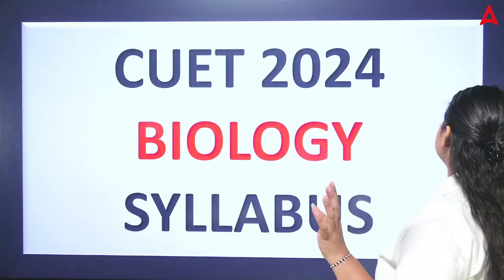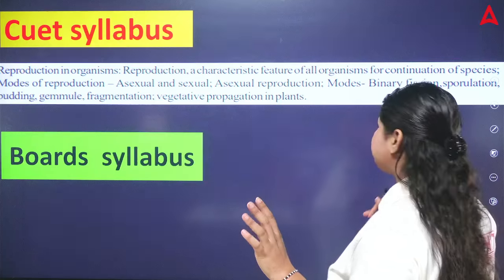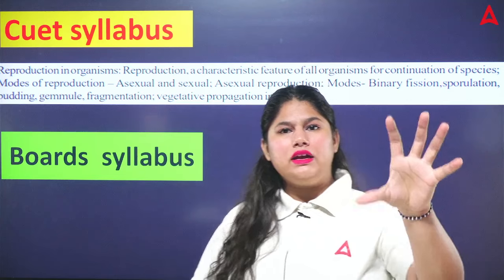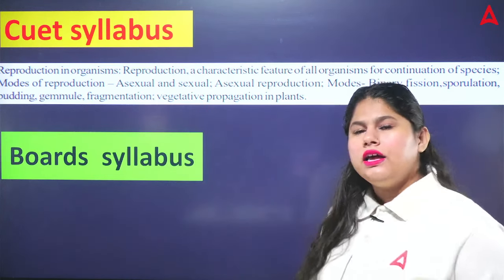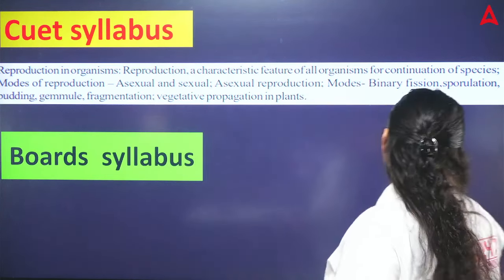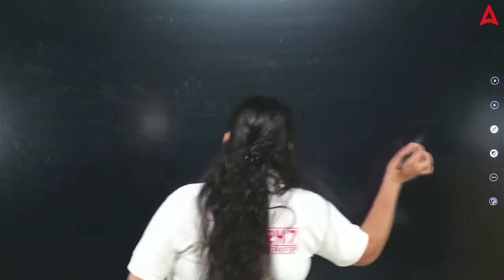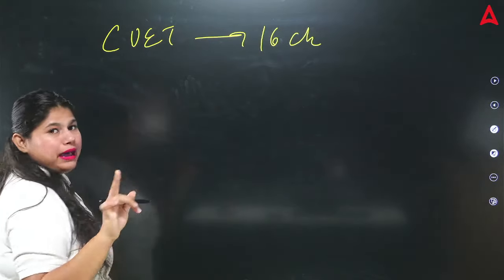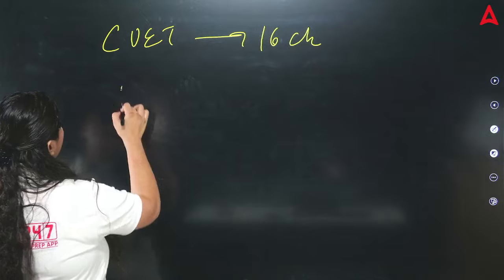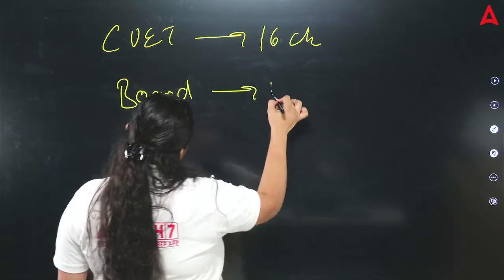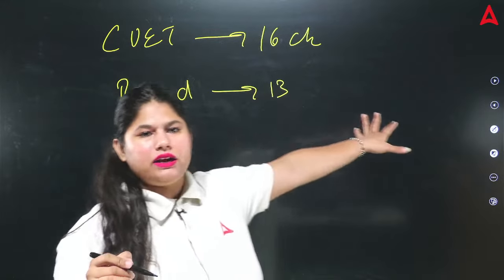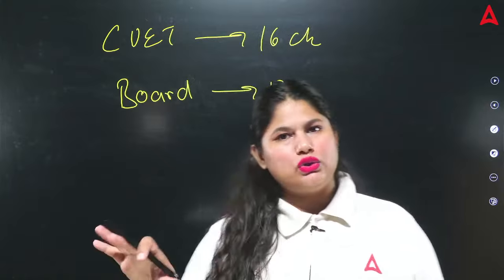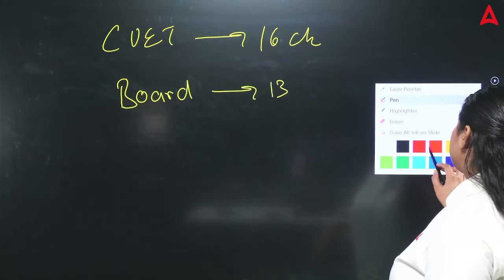I have organized the syllabus so you will not be frustrated. There is the syllabus of CVT and one is the syllabus of the board. Any chapter or topic that is removed, you will get to know it. In CVT, there are 16 chapters in biology. In the board, there are only 13 chapters — 3 chapters are removed from CDC, and there are some topics also removed.